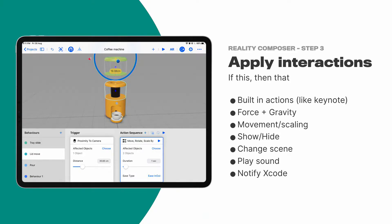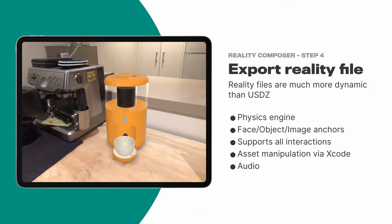Here's where the fun really starts — with the interactions. It's kind of like Siri Shortcuts: if-this-then-that coding style. For instance, press the button and something starts happening. It has built-in actions like Keynote — you can play sound and even notify Xcode. There are tons of things you can do: force, gravity, collision triggers, notify Xcode and take in requests from Xcode. Then you export the reality file. This is an example of the real coffee machine and my coffee machine next to it — with a real physics engine and support for all those interactions.